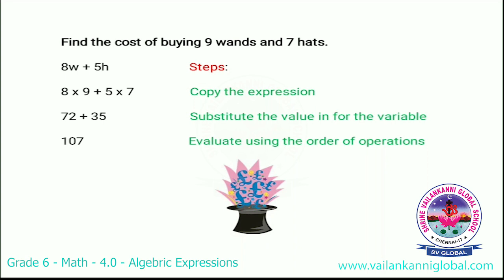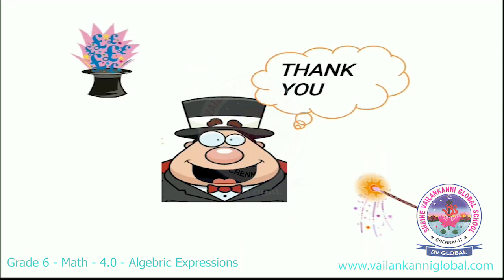Then substitute the values for w and h: the value for w is 9 and the value for h is 7, so 8 into 9 plus 5 into 7. Then evaluate — the total cost is 107 rupees. So he has to pay 107 rupees. Thank you.